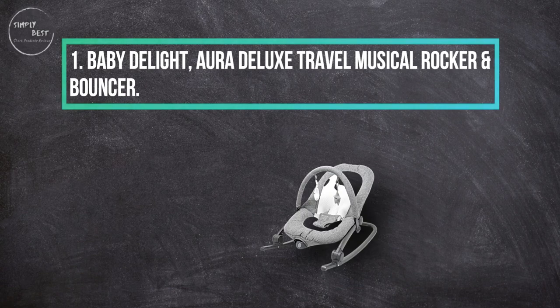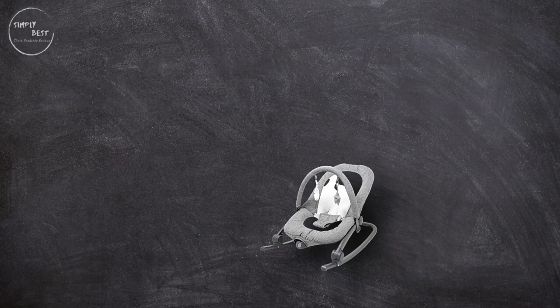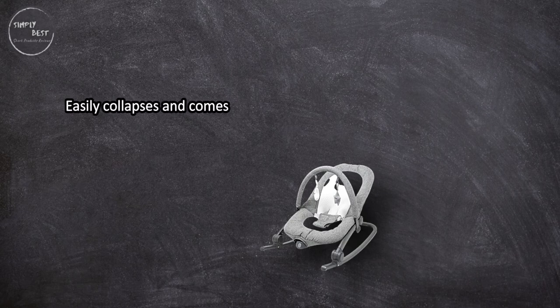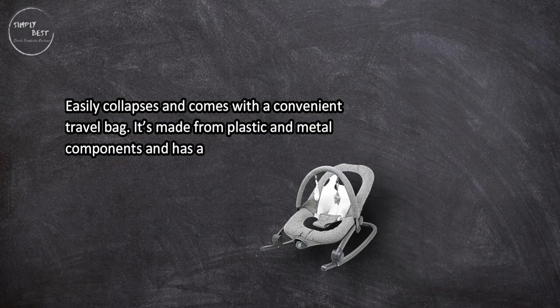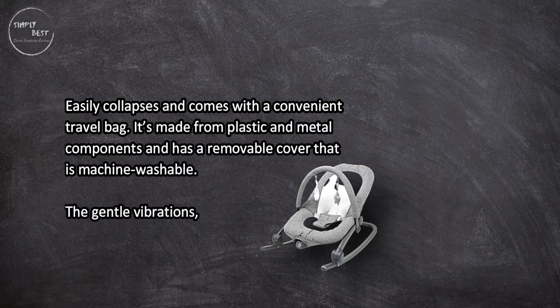At number one, Baby Delight Ohr Deluxe Travel Musical Rocker and Bouncer. Easily collapses and comes with a convenient travel bag. It's made from plastic and metal components and has a removable cover that is machine washable.